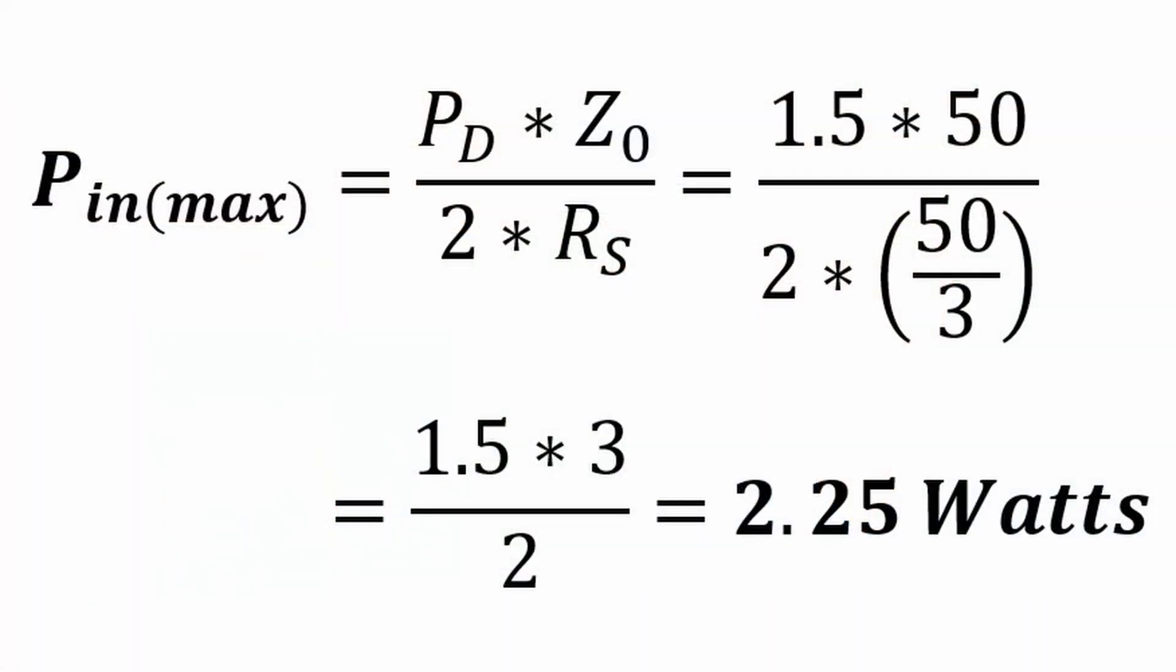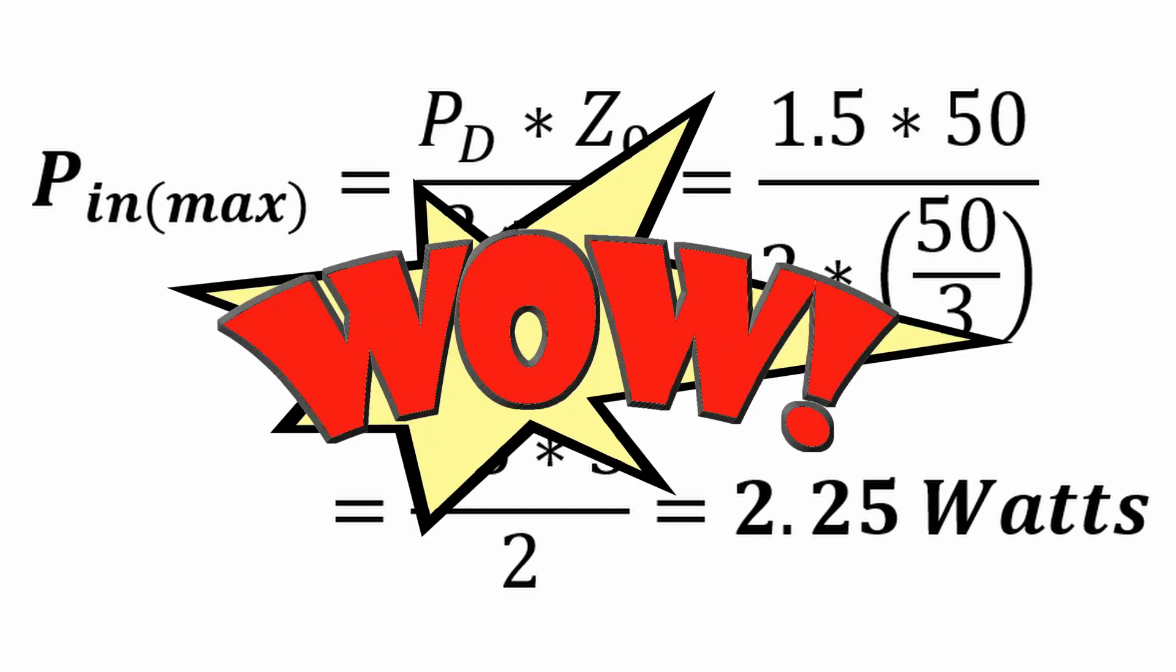Maximum power dissipation is equal to the power dissipation of the resistors as specified, which is 1.5 watts times the characteristic impedance of 50 ohms, all divided by 2 times the resistance of the series resistor, which is 16.666666 ohms, all comes out to be 1.5 times 3 divided by 2, or 2.25 watts. Wow, that's nice. Now, let's look at its performance.